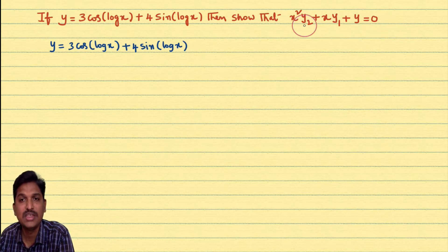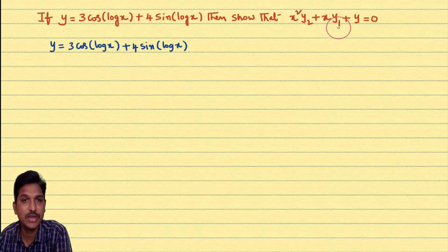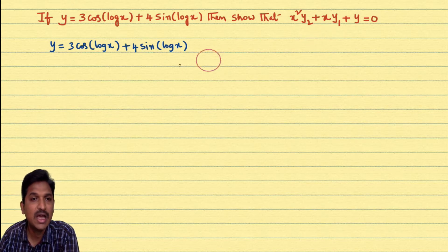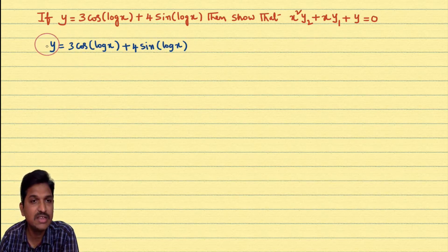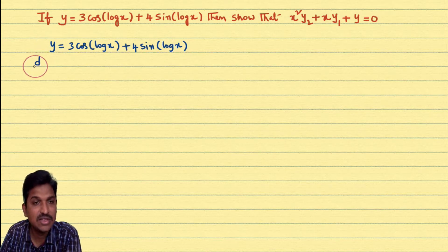Observe here: y₂ is the second-order derivative and y₁ is the first-order derivative. To get y₁, I'll differentiate this complete equation with respect to x. Here is the differentiation step.